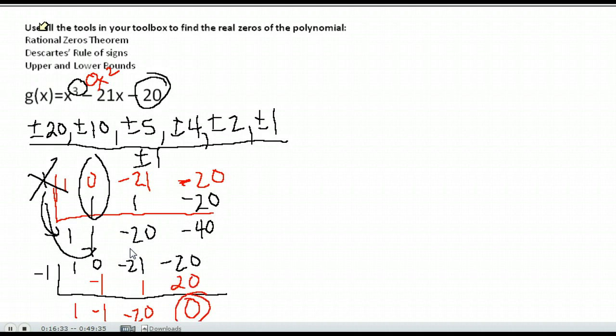Oh look, this time I get zero as my remainder. That tells me negative 1 is one of my zeros. So back up here where I'm writing my answers down, I know negative 1 is one of the answers.